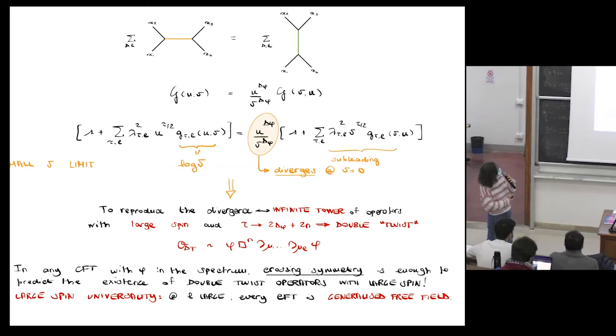So we have that this equation should be equal to this equation. But notice that on the left-hand side we have a power divergence when we consider the small v limit, because we have this one over v to the delta-phi, and this divergence should be reproduced by this sum.